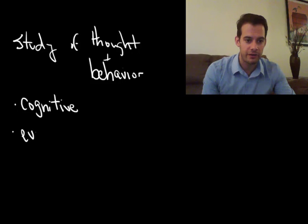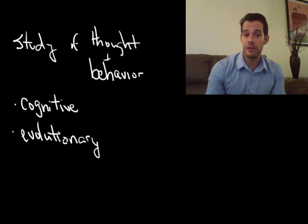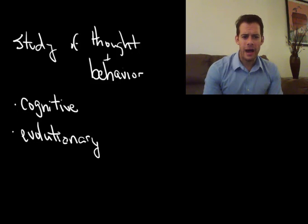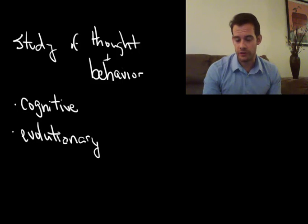We also have evolutionary psychology. Evolutionary psychologists want to know how our thinking and our behavior has been shaped over millions of years of evolution. So how have certain patterns been selected for over time?